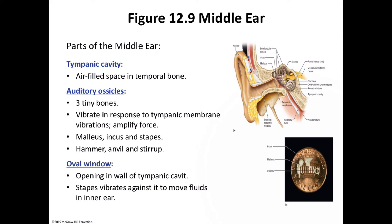Earwax and hairs help keep foreign objects — including insects — out of the ear. There are two types of earwax: a dry type that is grey, and a wet type that is brown or golden. The difference is determined by a single base in DNA. Sound travels in waves — like ripples at the beach. The higher the wave, the louder the sound; the more waves per second, the higher the frequency or pitch.